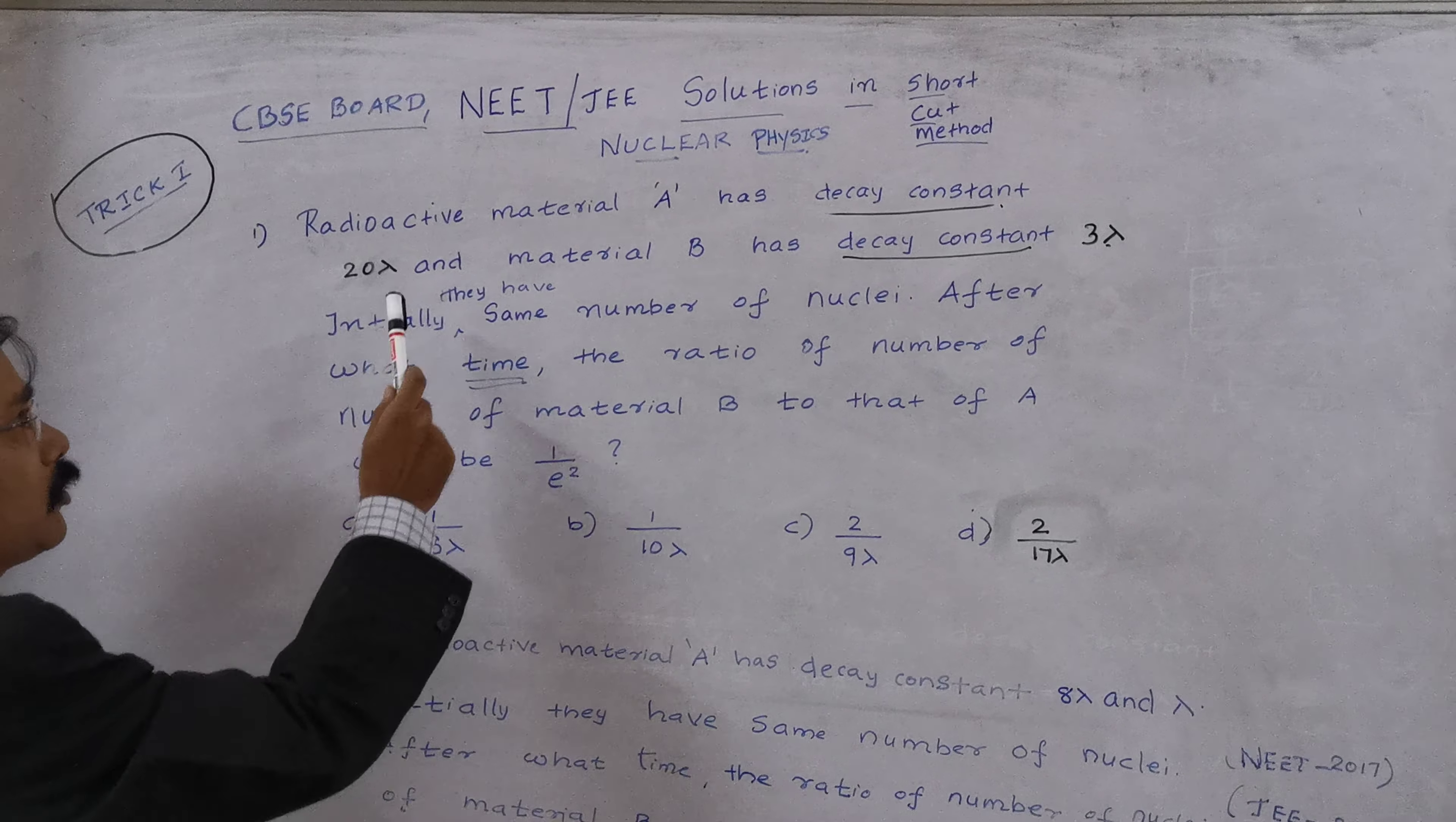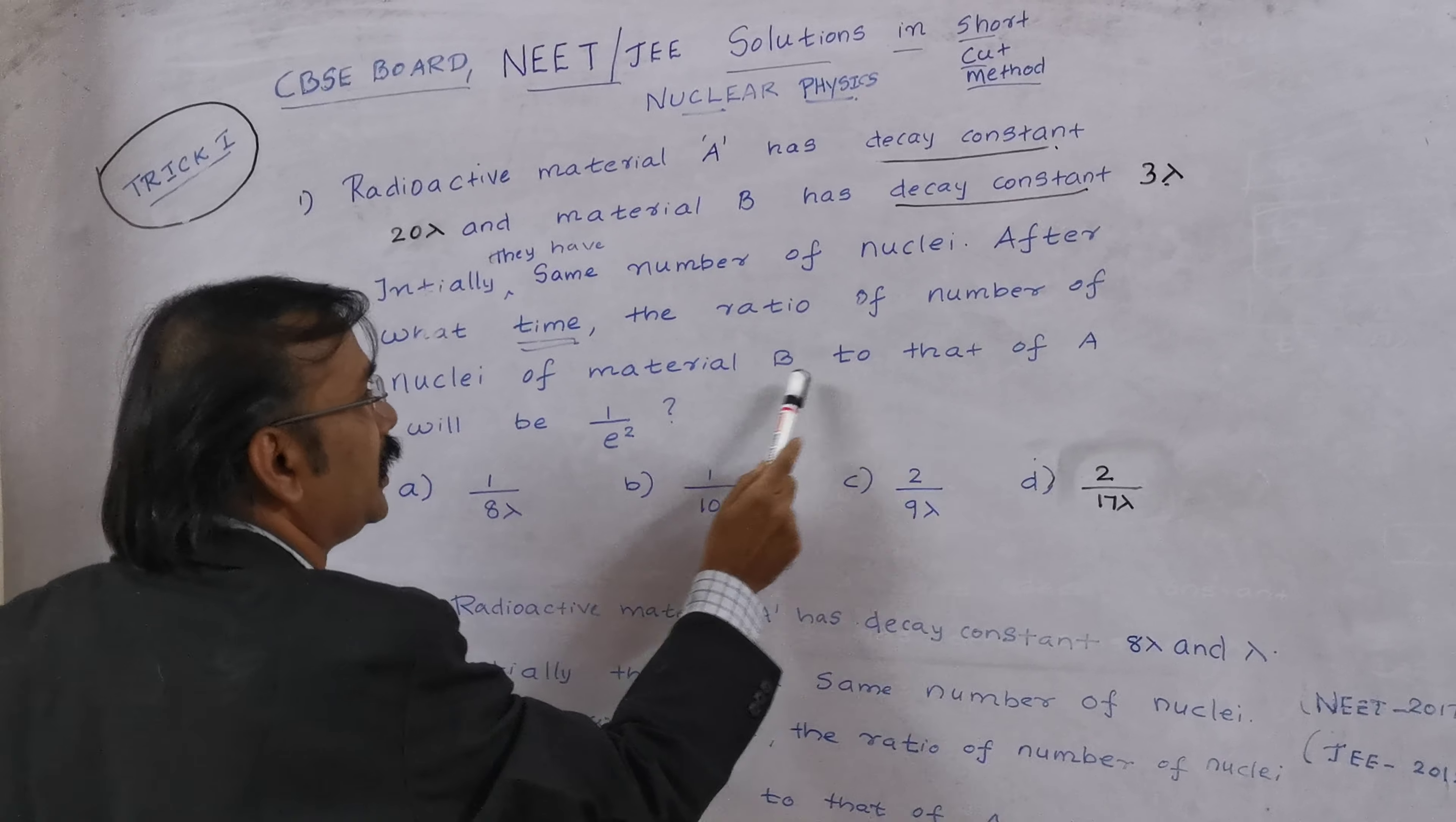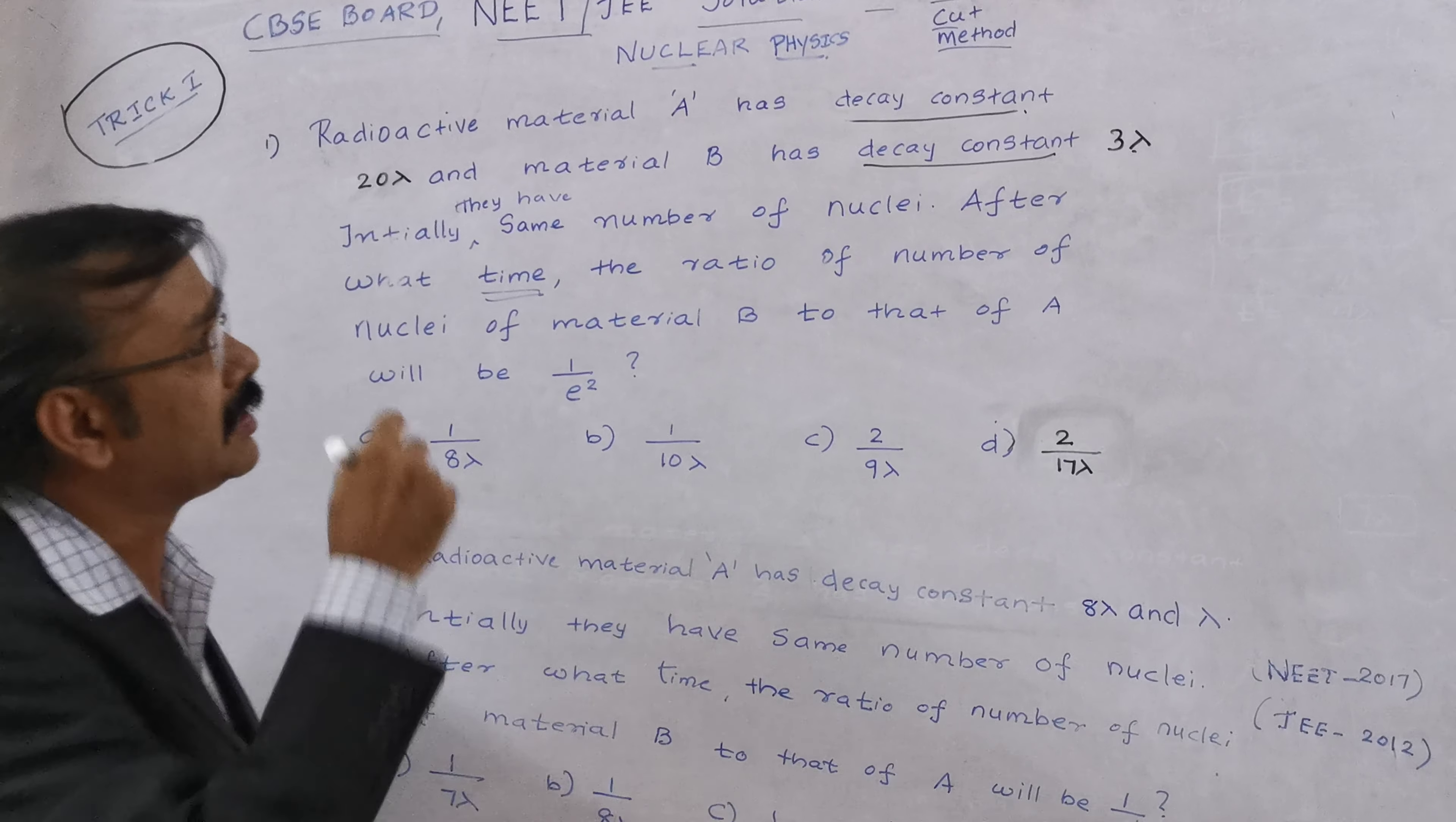Let us go with the trick number 1, how the question will be. So the question will be like this: radioactive material A has a decay constant 20 lambda and material B has a decay constant 3 lambda. Initially they have same number of nuclei. What time the ratio of number of nuclei of material B to that of A will be 1 by A square. So the main important trick here is what you have to see is in the question I have to ask two decay constants here. If you are going to see two decay constants, now how to write the solution I am trying to do.